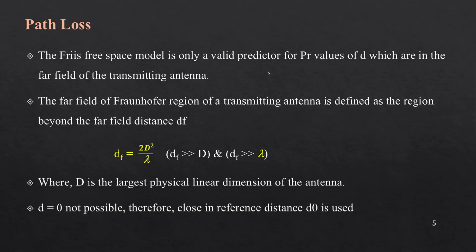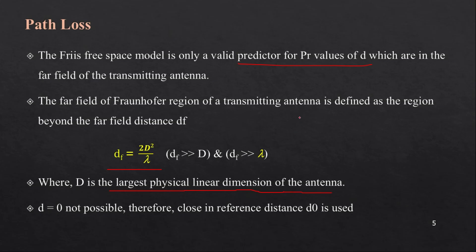The free space formula cannot be applied to objects very close to the transmitter. It is only valid for values of d that are in the far field of the transmitting antenna. The far field distance is calculated as df = 2D² / λ, where capital D is the largest physical linear dimension of the antenna. The Friis formula and path loss can only be applied beyond this far field distance df.